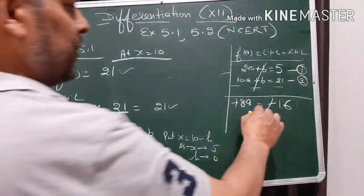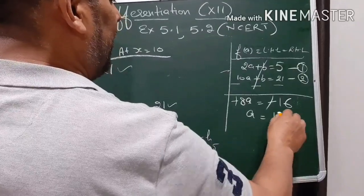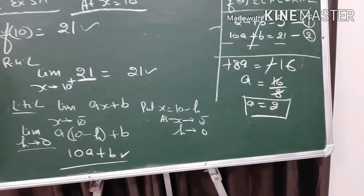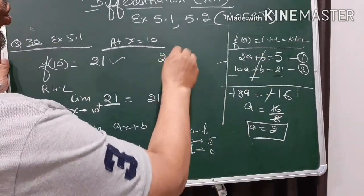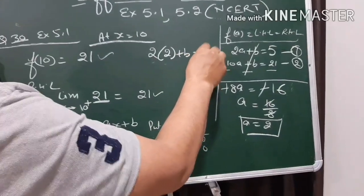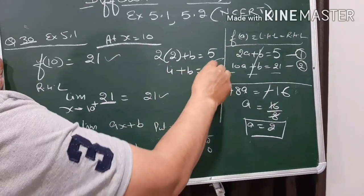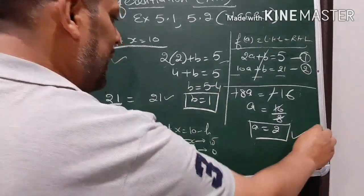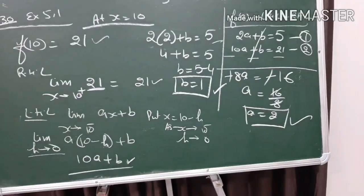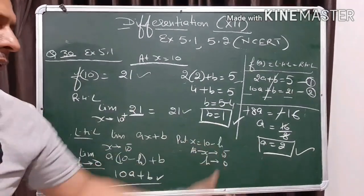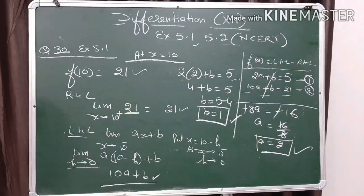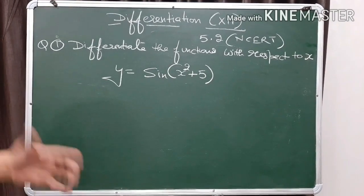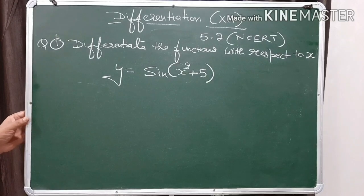We put the value of a into equation 1: 2 times 2 plus b equals 5, giving 4 plus b equals 5, so b equals 1. Therefore a equals 2 and b equals 1 — these are the values we needed to find. Now we'll move on to Exercise 5.2, which has 10 questions, and we'll try to do a few of them today.